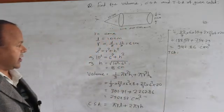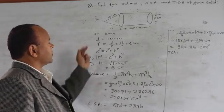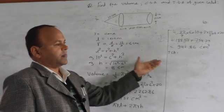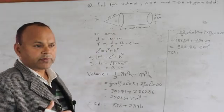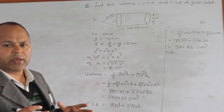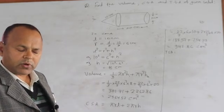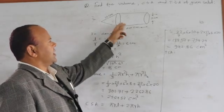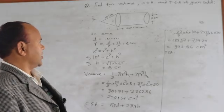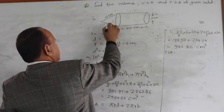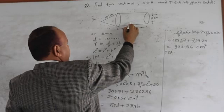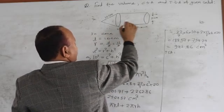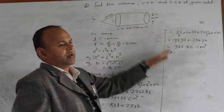Now let us find the total surface area. For volume we sum the volumes, and for curved surface area we sum the curved surfaces. But for total surface area we use: curved surface area plus the area of any plane surfaces. This combined solid has three surfaces: the curved surface of the cone, the curved surface of the cylinder, and the area of the circular base.